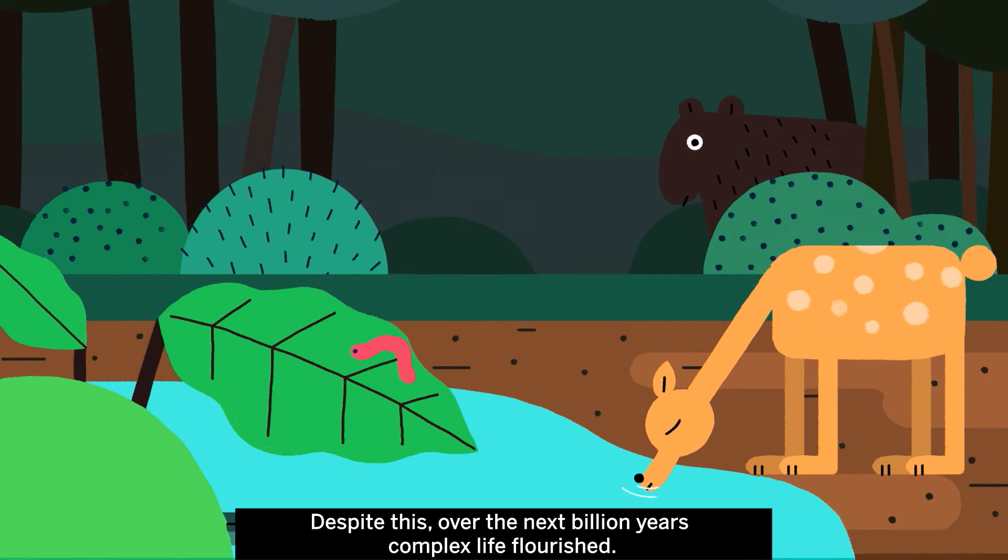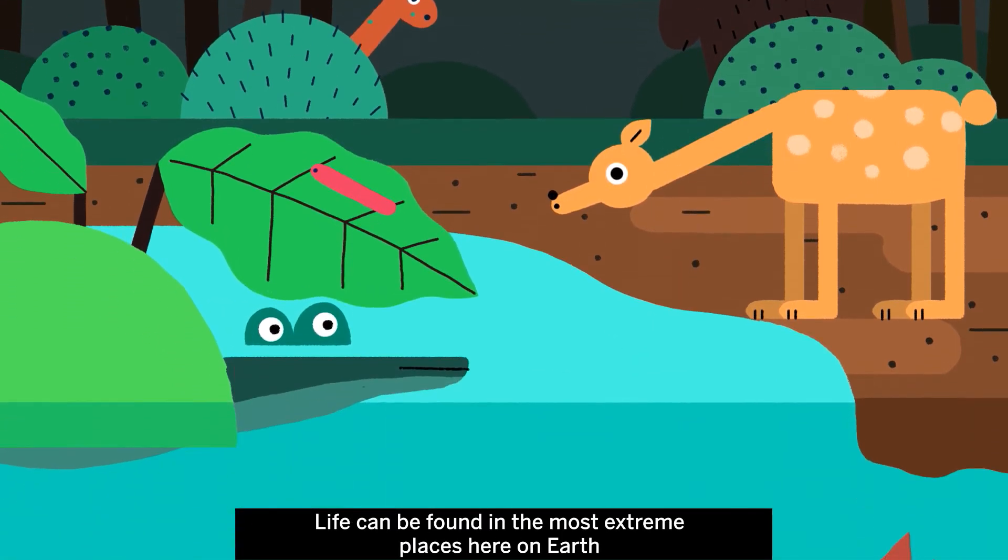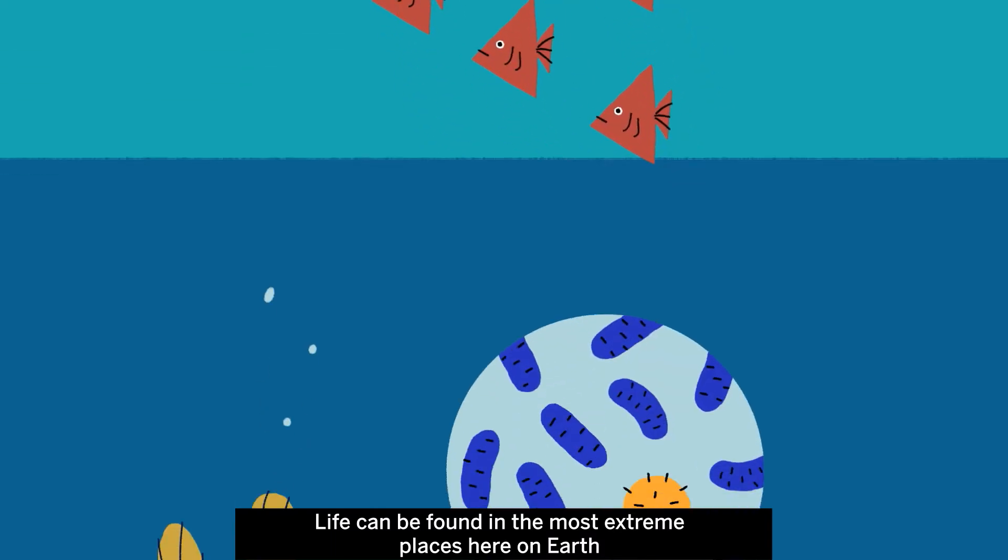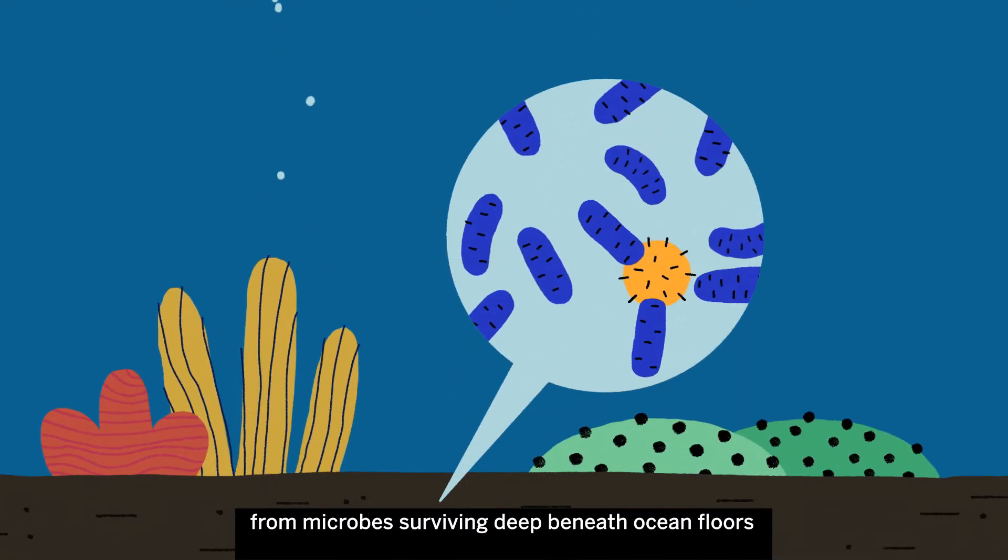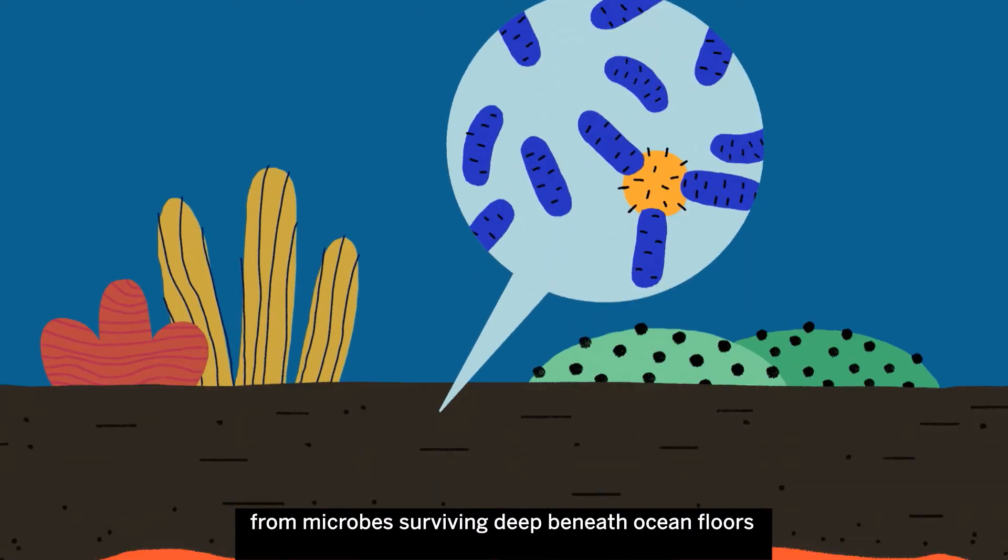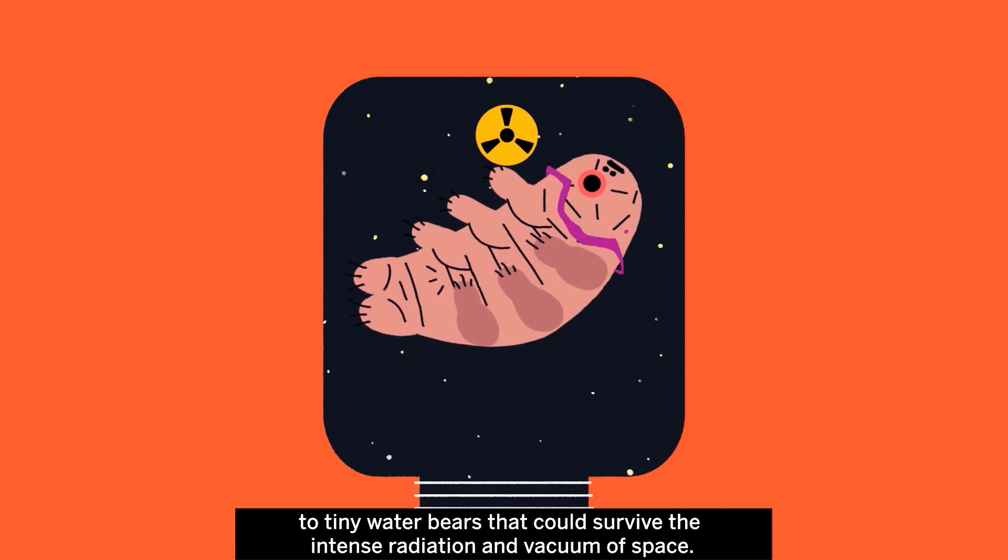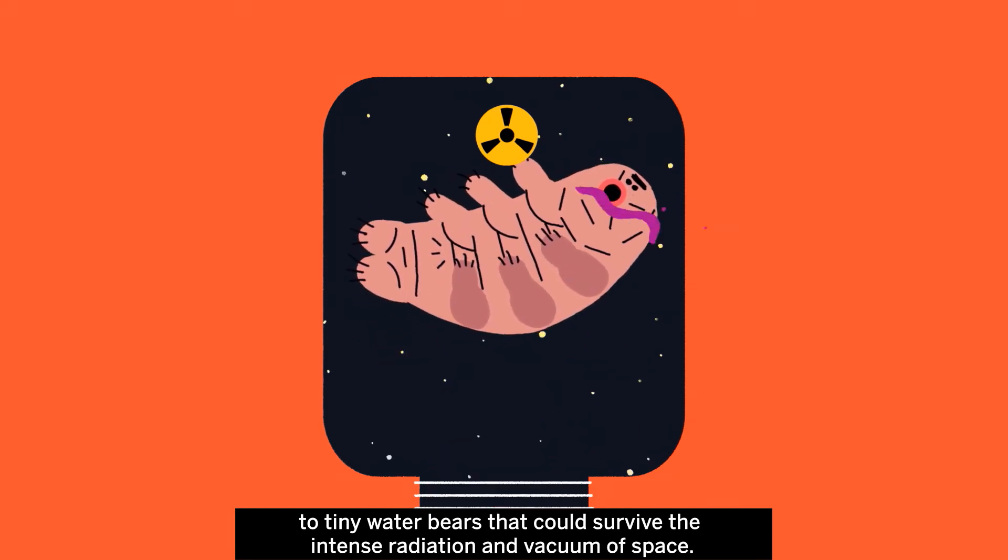Despite this, over the next billion years, complex life flourished. Life can be found in the most extreme places here on Earth, from microbes surviving deep beneath ocean floors to tiny water bears that could survive the intense radiation and vacuum of space.